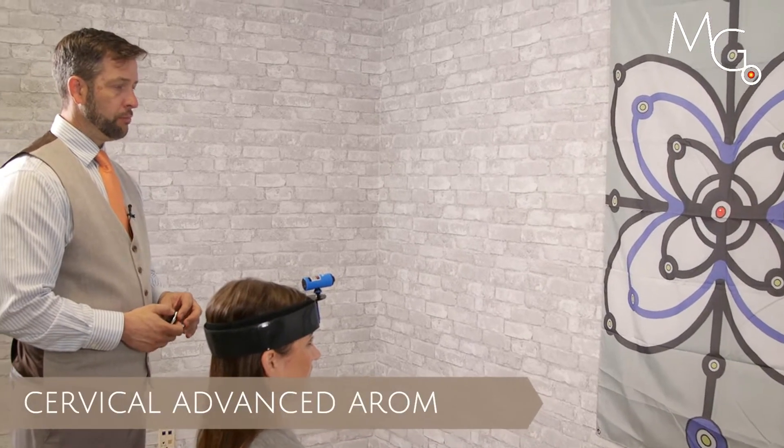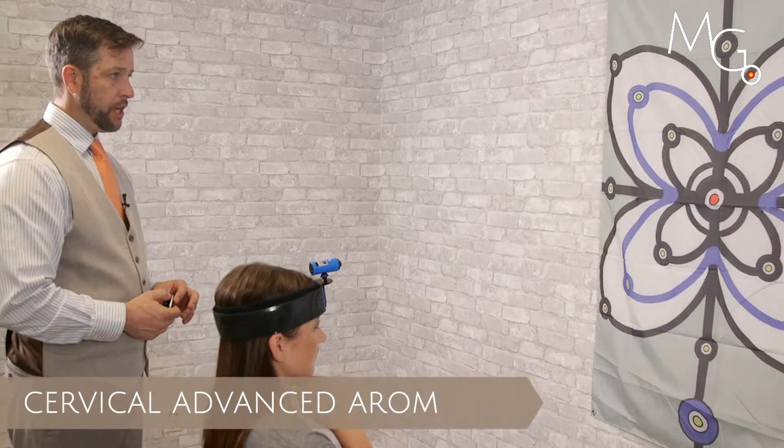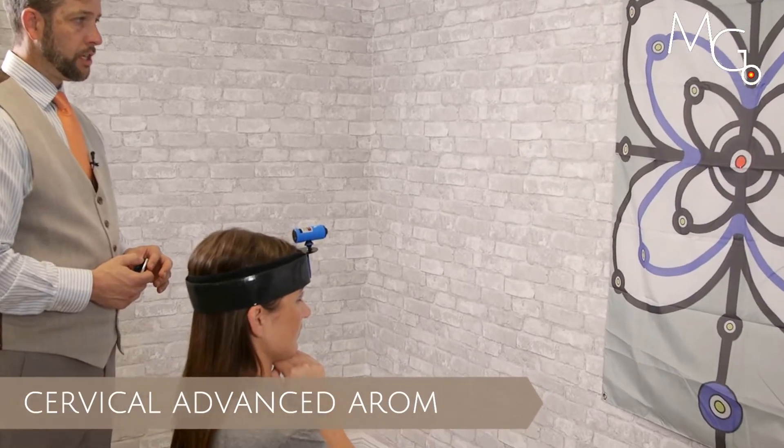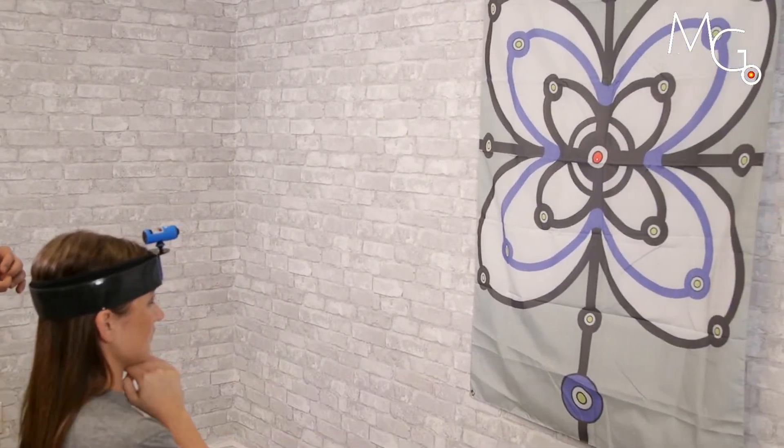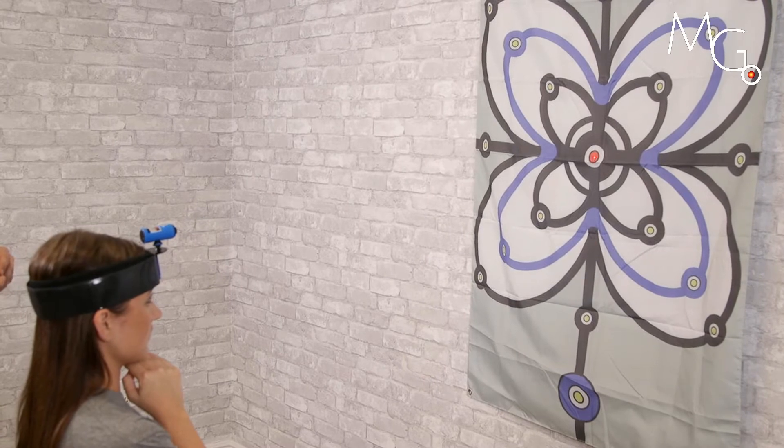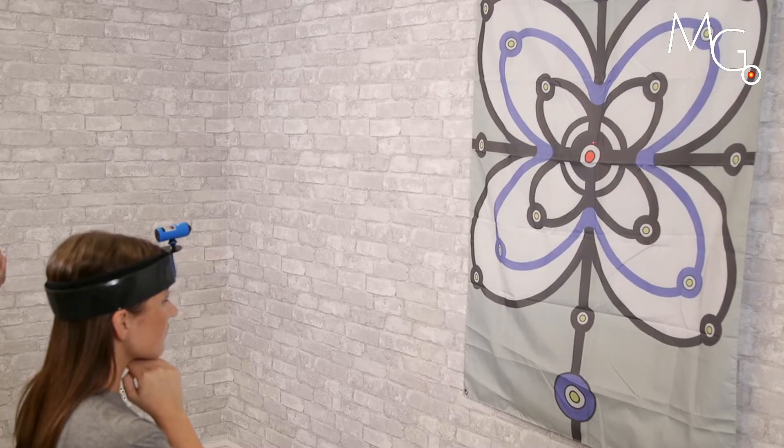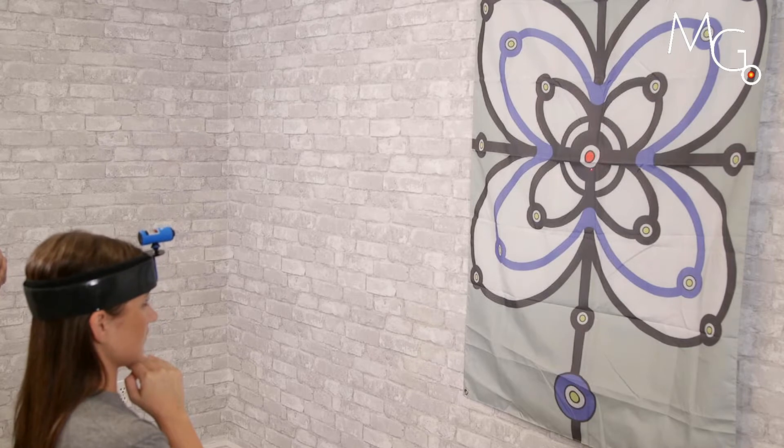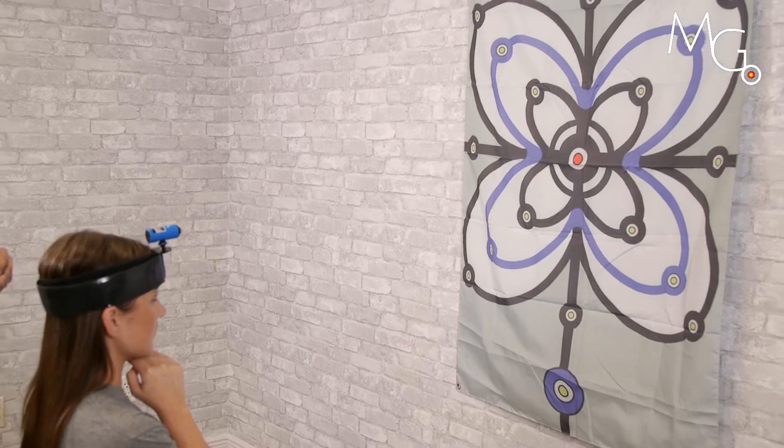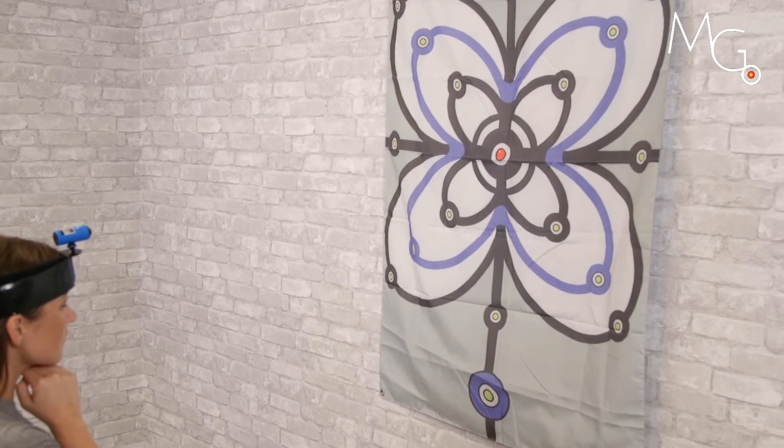For protraction and retraction movements of the head and neck, have the patient center the laser on a target. Cue them to keep the laser inside that target and move their head forward toward the wall, then back and away, forward and back.